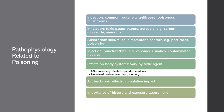Inhalation occurs when a person breathes in toxic substances such as gases, vapors, or aerosols. Examples include carbon monoxide, which binds to hemoglobin in the blood and prevents oxygen from reaching vital organs, or inhaling ammonia, which can cause severe respiratory irritation and potentially lead to respiratory distress.